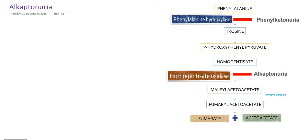Hello everyone, today we are going to see another important but very rare disorder of protein metabolism, especially inborn error of amino acid metabolism. This is a disorder of phenylalanine metabolism or tyrosine metabolism. In the last presentation we already studied about phenylketonuria, so in this presentation we are going to study about alkaptonuria.